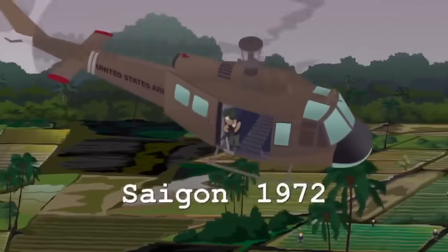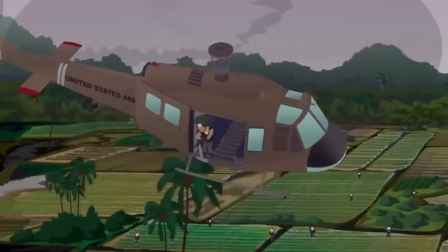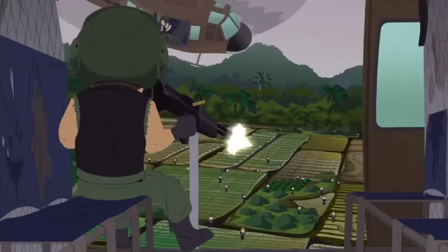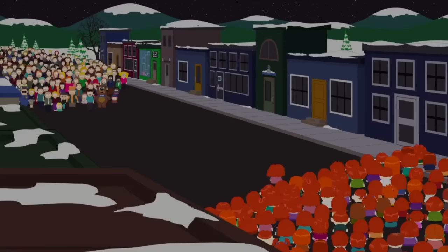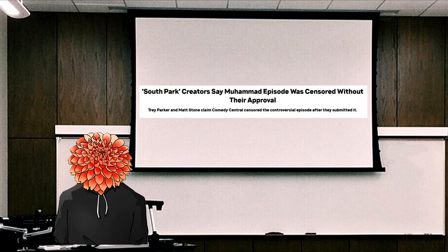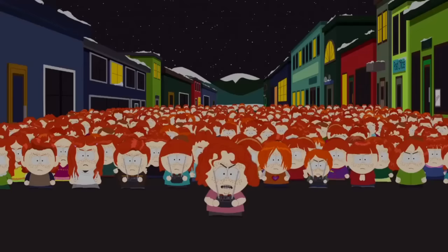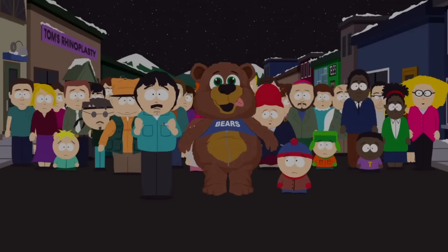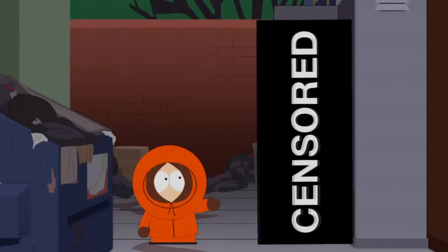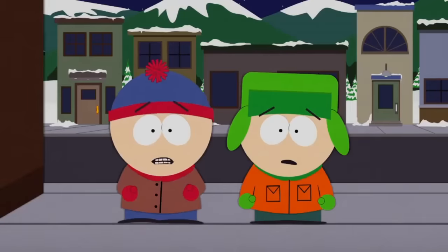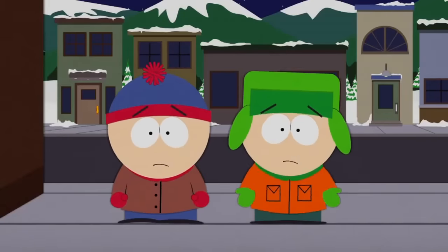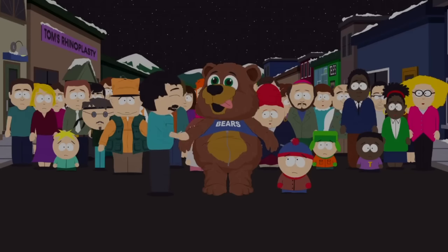On April 21st, 2010, part 2 of the 200th episode special aired, simply titled 201. We are right back where we left off, with the gingers demanding to see [censored]. That's because Comedy Central decided they didn't agree with the messages Matt and Trey were trying to put out and gave in to the demands of the terrorists. When the episode aired, anytime they would even say the name of the prophet of the Muslim faith, it was censored. Not only that, but all images of [censored] were completely censored from the episode — so much so that if you hadn't seen the first part, you would have no clue who they were even talking about.